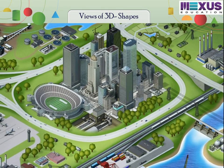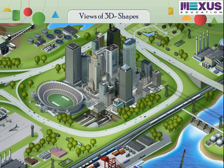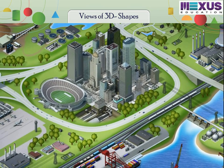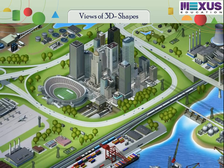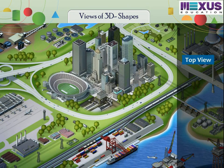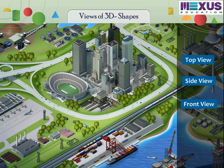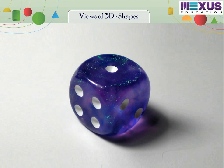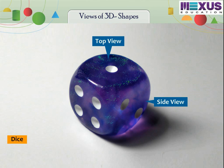Every object that we see has different views, and this view depends on the direction from which we are looking at the object. The different types of views are top view, side view, and front view. Now let us see the different views of a dice. Top view of a dice, side view of a dice, front view of a dice.